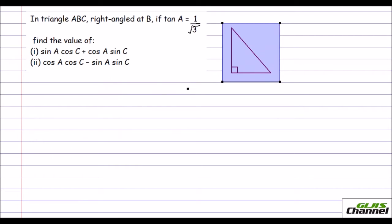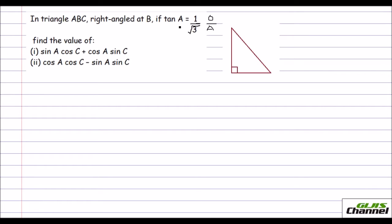Let me find out all the sides. What is given here? They say tan A is 1 over root 3. You know tan is opposite over adjacent. So the values given are the opposite and adjacent of angle A, because it is tan A — remember, it is tan A.